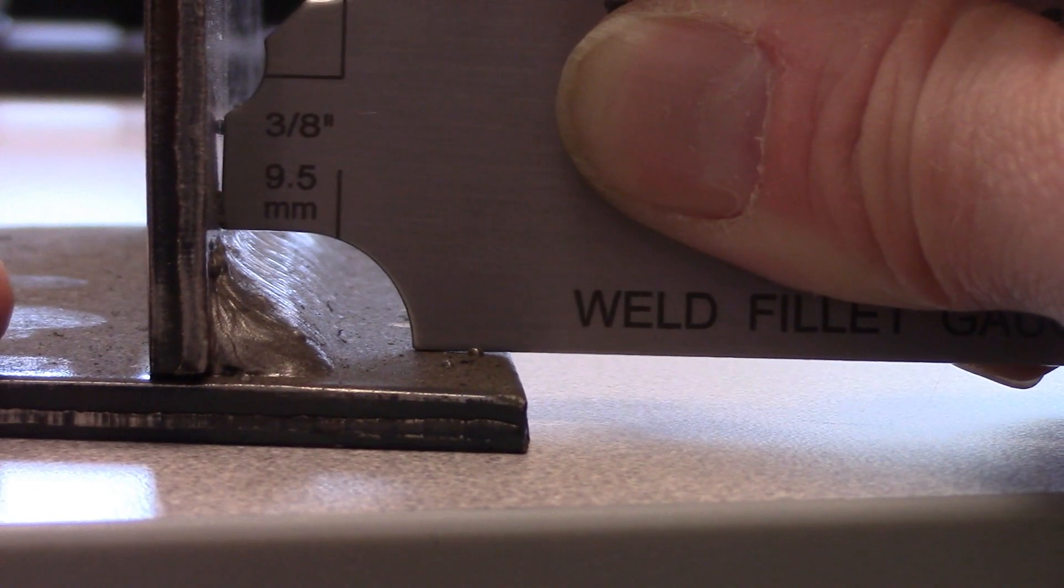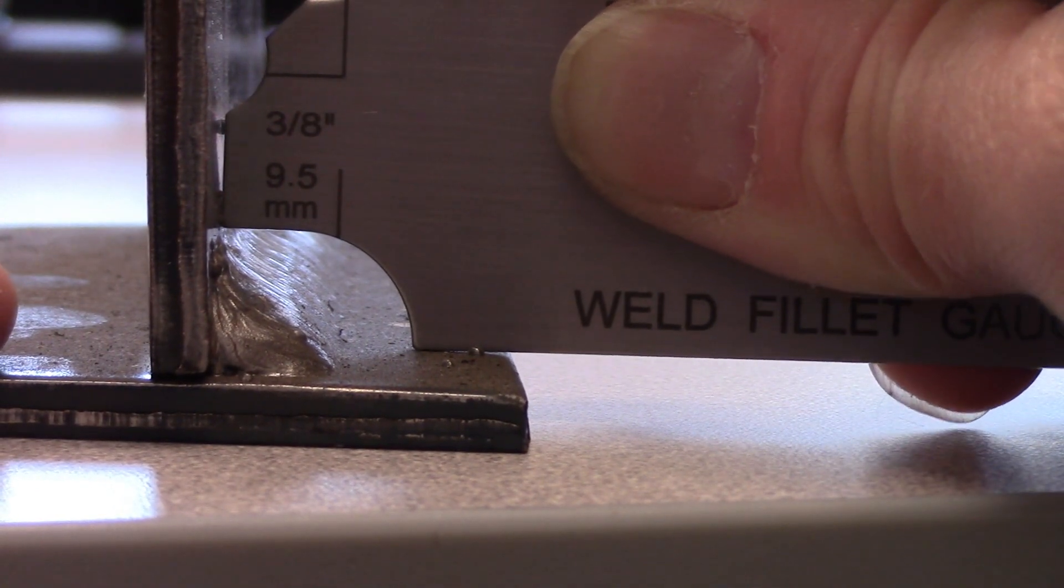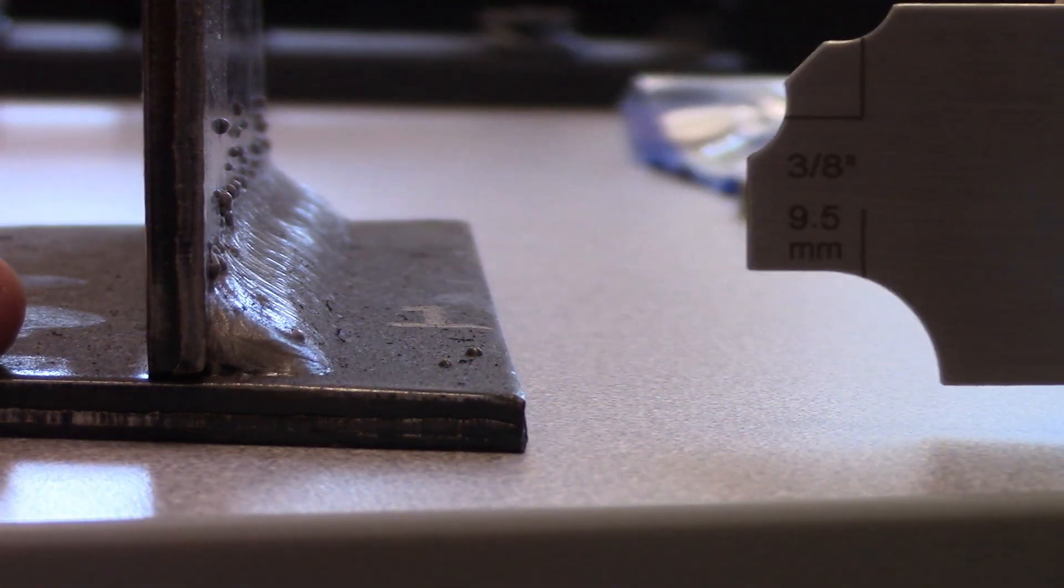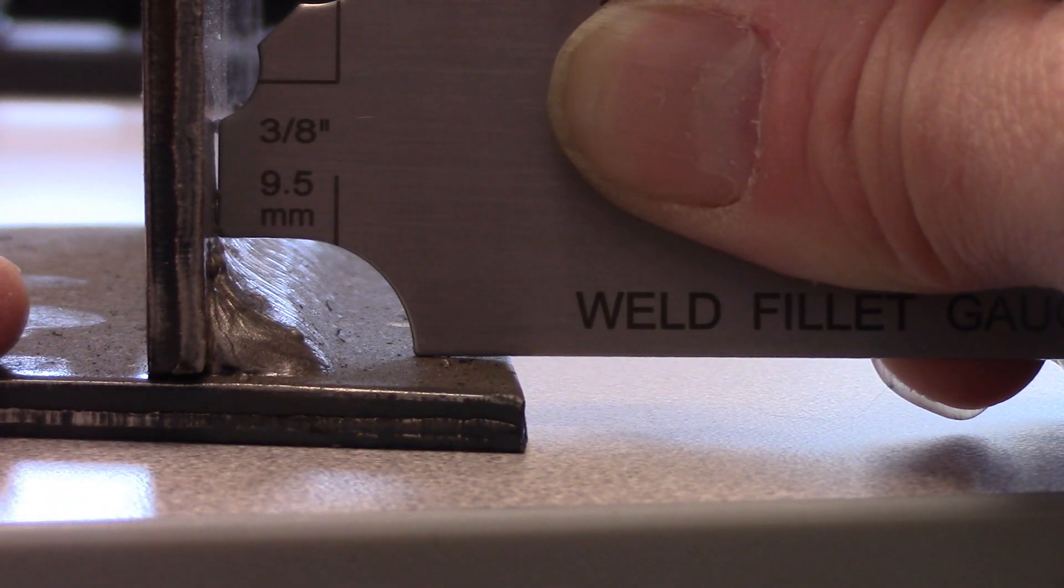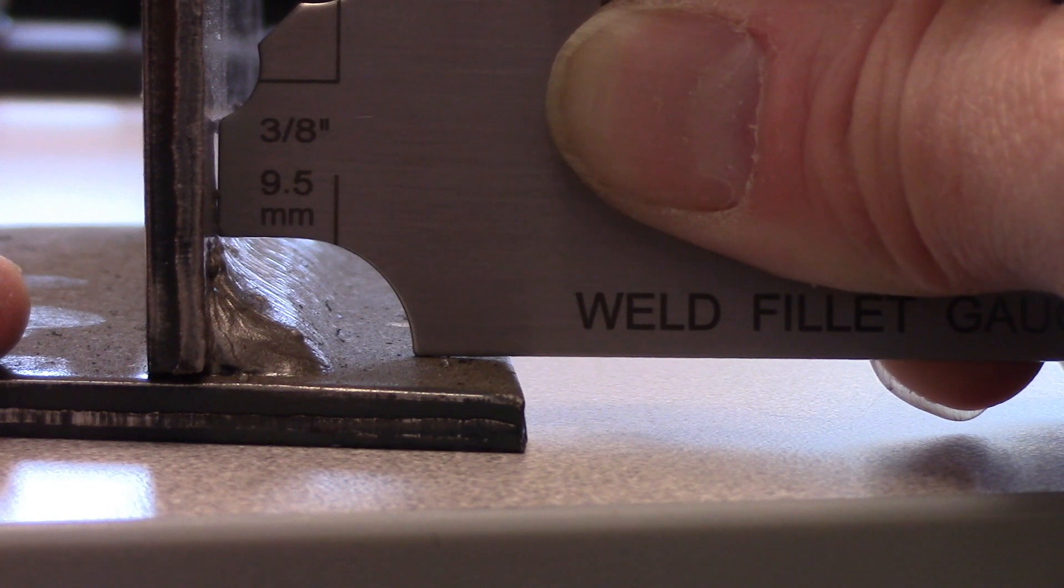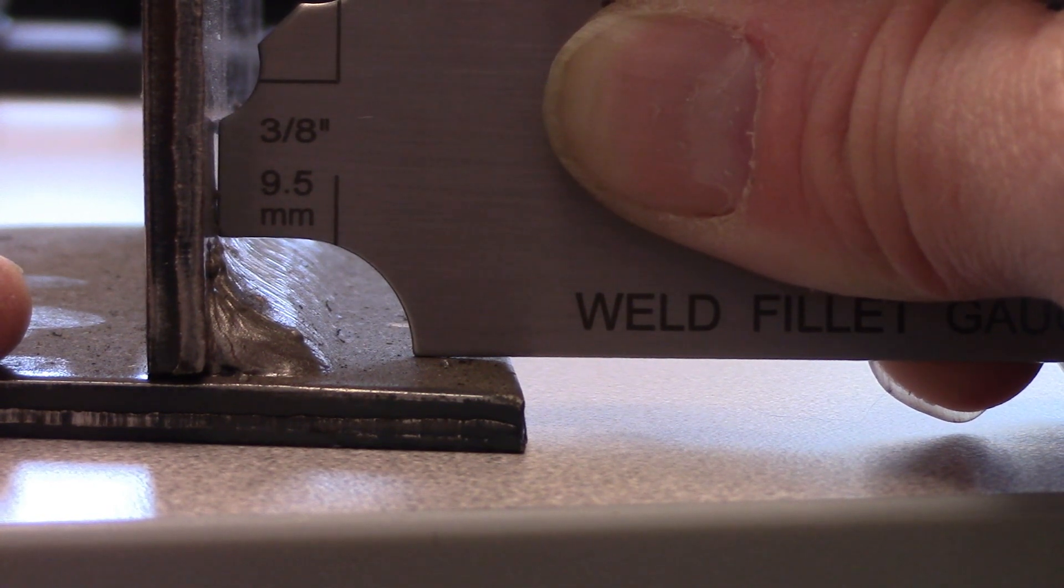Alright we're back. And I know it's tough to see on a camera. Let me pull this back. You can see there's the toe. And 3/8ths lines up almost perfectly with it. It doesn't look as good in the camera as it is with my bare eye. So you've got a 3/8ths leg size there.